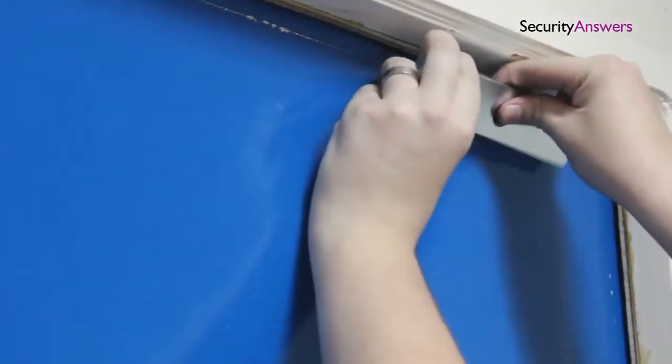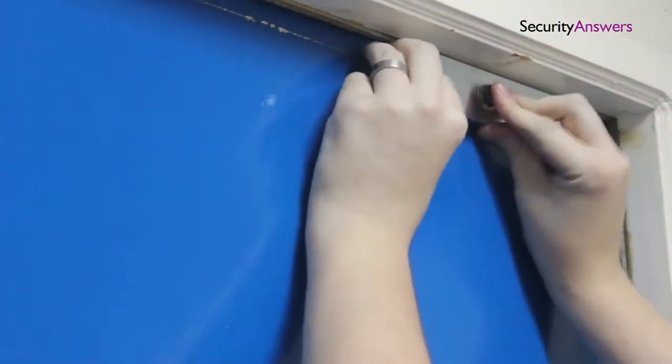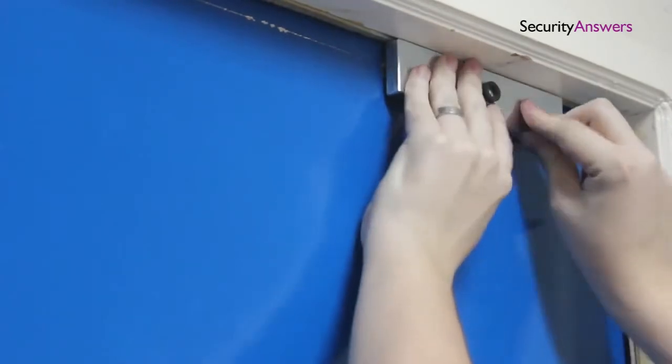Once you have marked off the area you can begin to mount the plate to the door using the appropriate screws or fitments.